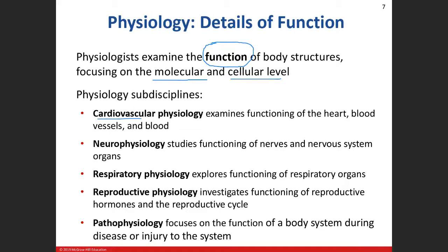Cardiovascular physiology, respiratory physiology, and reproductive physiology — those three will be studied in 2.11. Cardiovascular has to do with the heart, the blood vessels, and the blood. Respiratory is breathing — lungs and all that. Reproductive has to do with our reproductive organs, the reproductive cycle, and the hormones involved. Neurophysiology we're going to cover this semester — that's going to include the nervous system and all the nerves. Pathophysiology — we'll give you a little bit of information, but this is not the course for that.